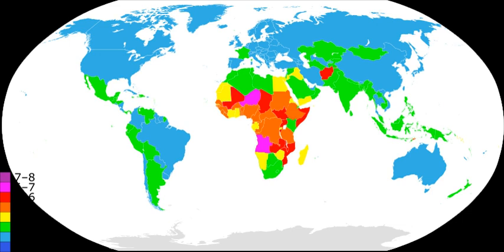Human population planning is the practice of intentionally controlling the rate of growth of a human population. Historically, human population planning has been implemented with the goal of increasing the rate of human population growth.